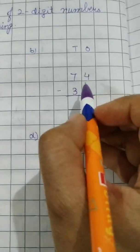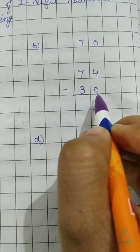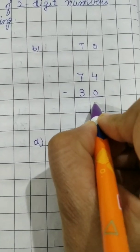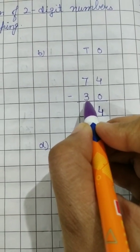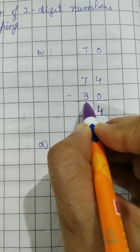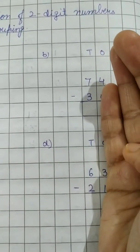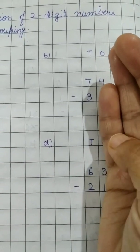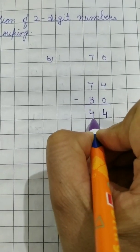Now B part. 4 minus 0. When we subtract 0 from something, we will get the same number. 4. 7 minus 3. So here it is 3. So we have to start from 4 and we have to go till 7. 4, 5, 6, 7. Answer is 1, 2, 3, 4. So 7 minus 3, answer will be 4.